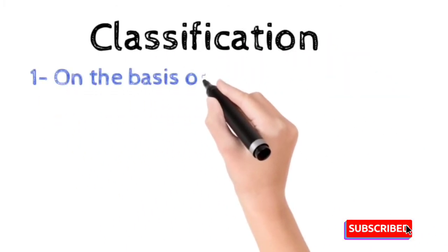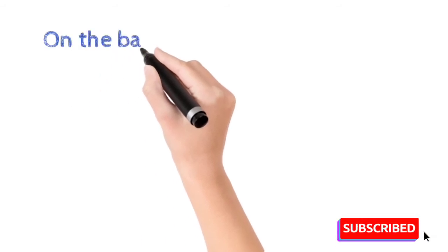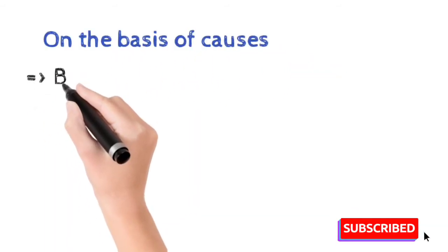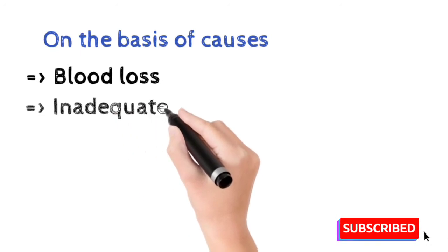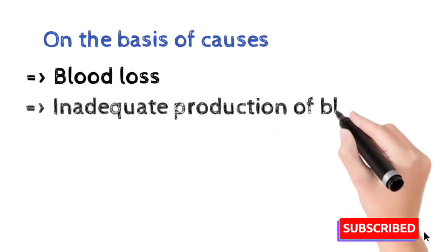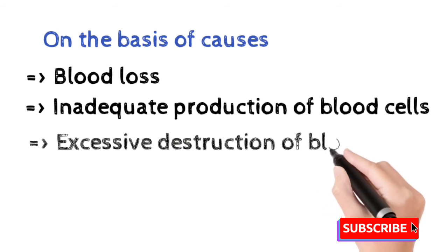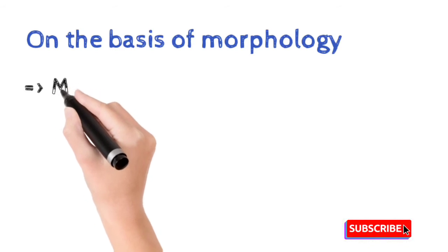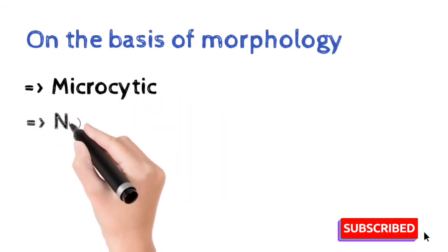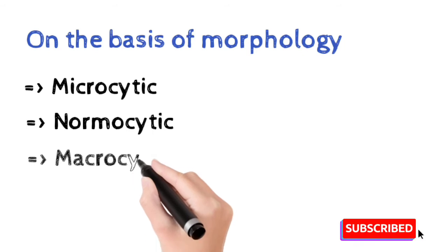Anemia is classified in two types: number one, on the basis of causes, and number two, on the basis of morphology. On the basis of causes: first is blood loss, during which blood loss occurs due to any injury or chronic blood disease; second is inadequate production of RBCs; and third is excessive destruction, during which the rate of destruction is greater than production. On the basis of morphology, it is divided into microcytic, normocytic, and macrocytic anemia, based on MCV value.